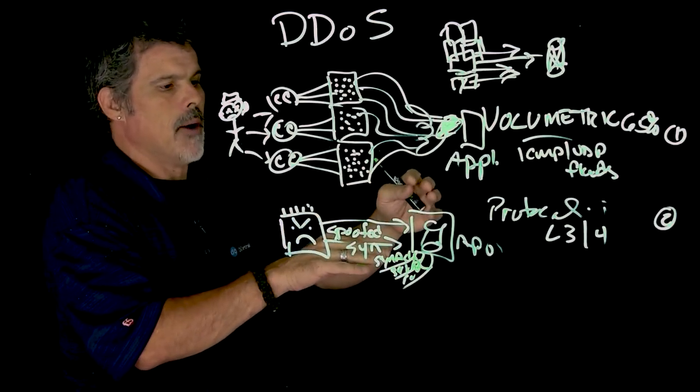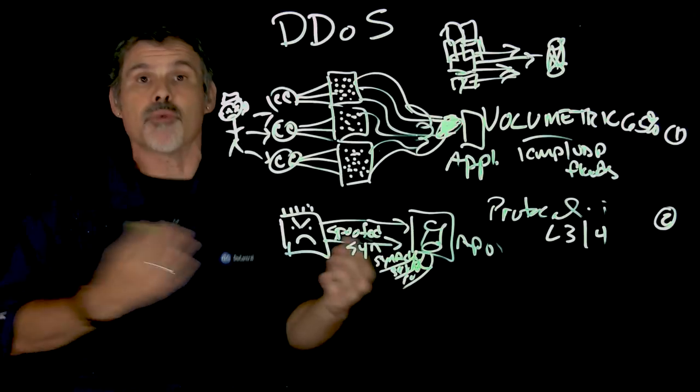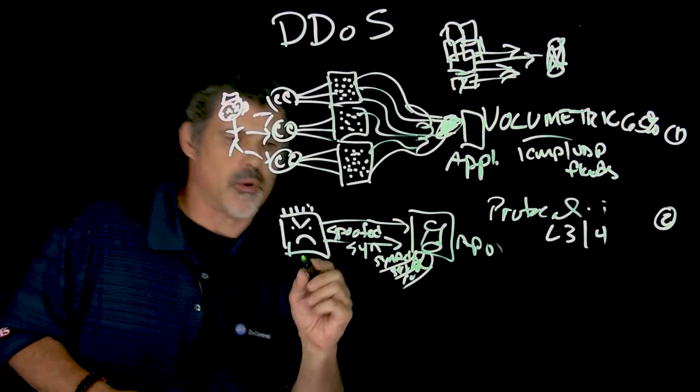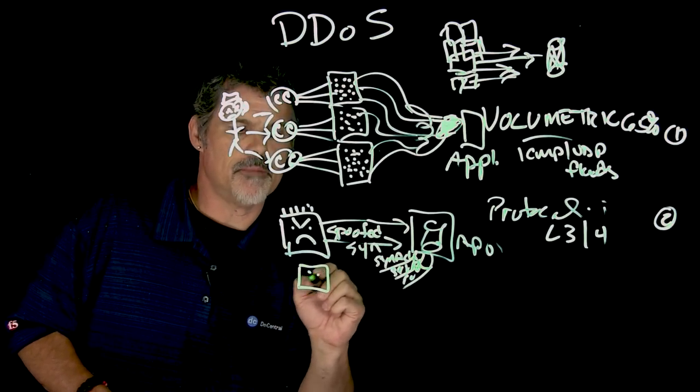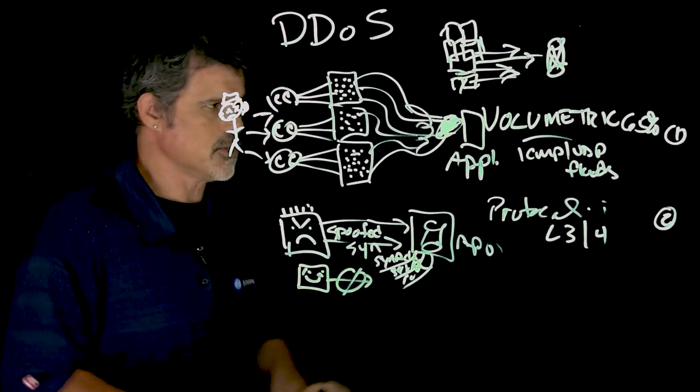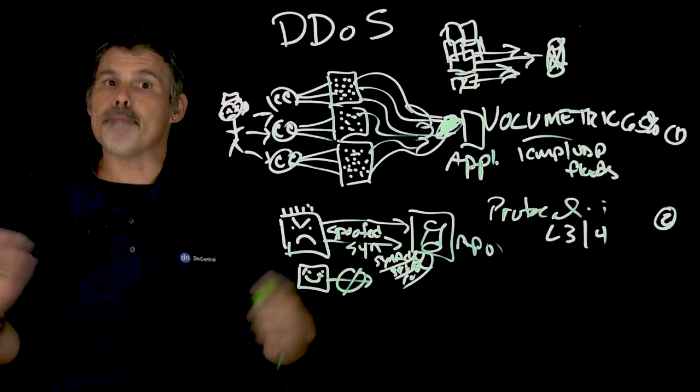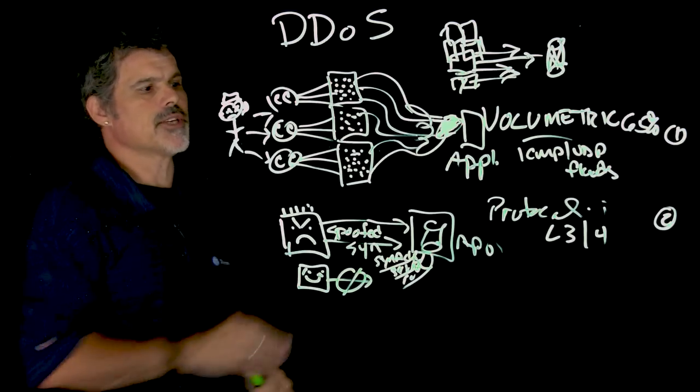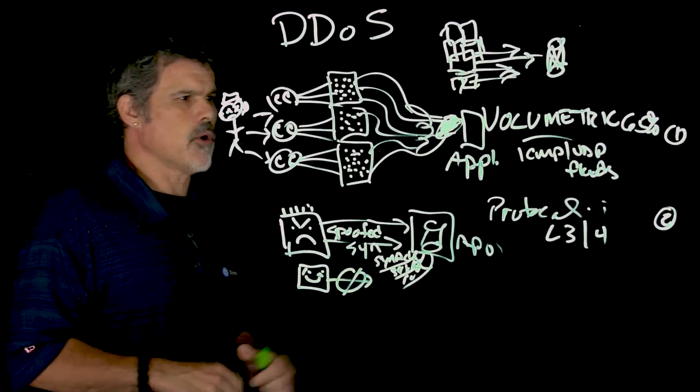its memory fills up, it just becomes unresponsive over time, so that when a good box comes in, they get no service. So, that would be a protocol attack, focusing on layers three and four.